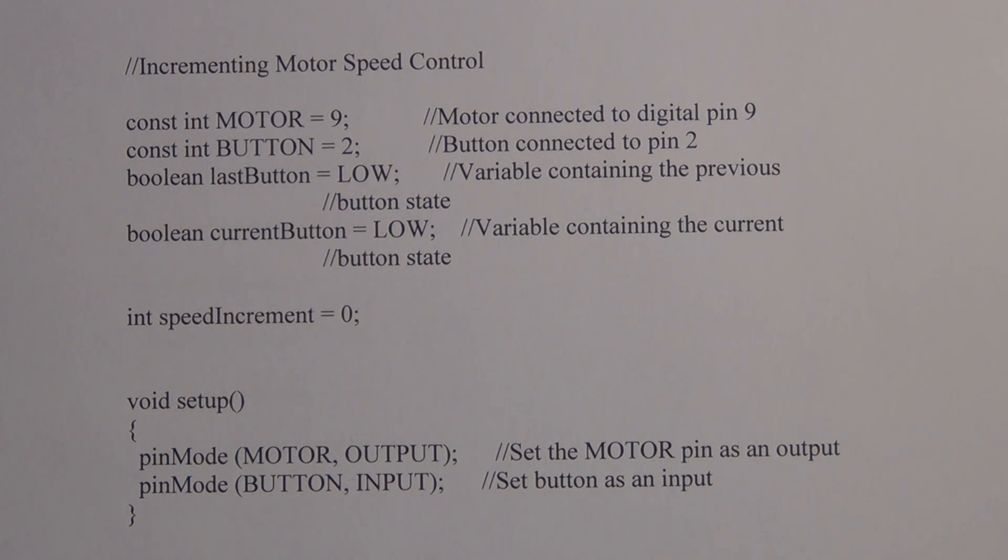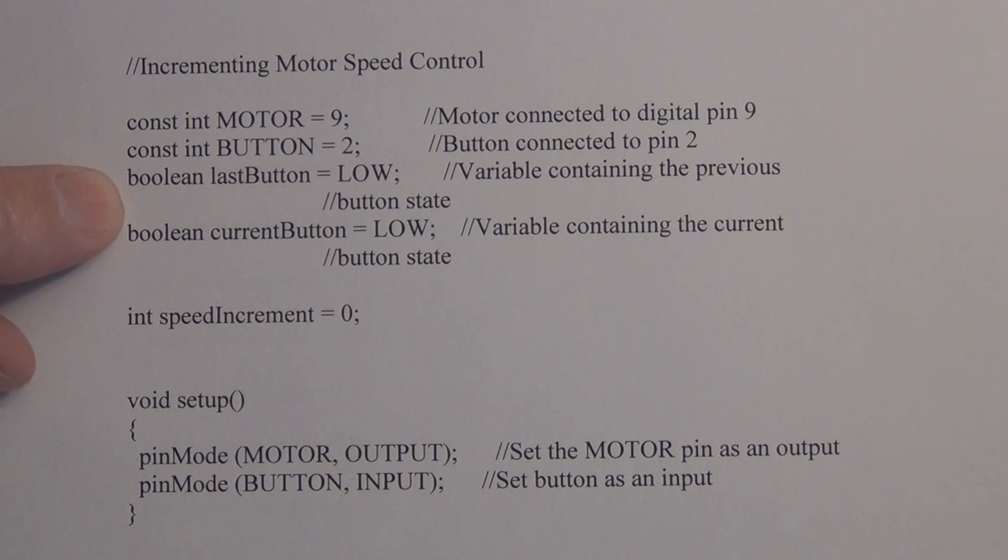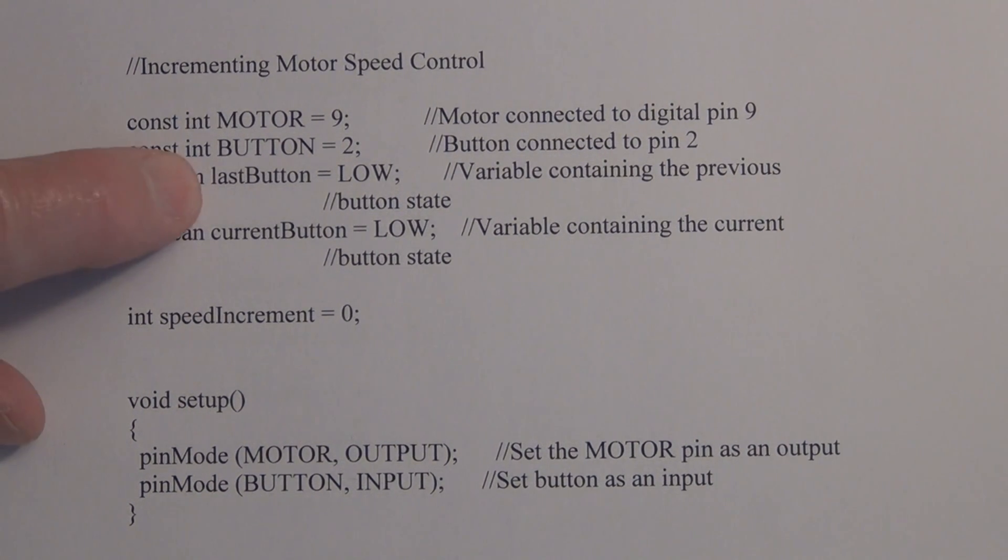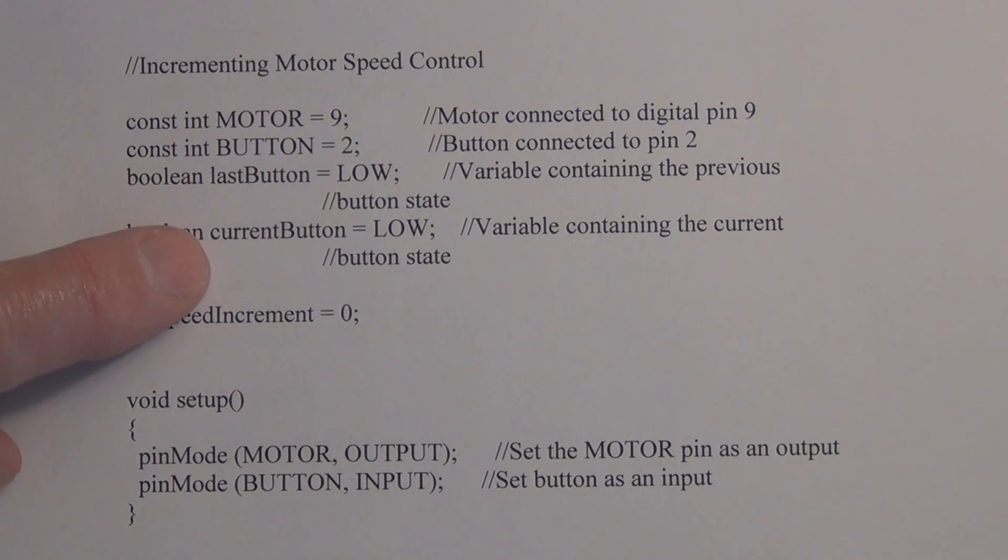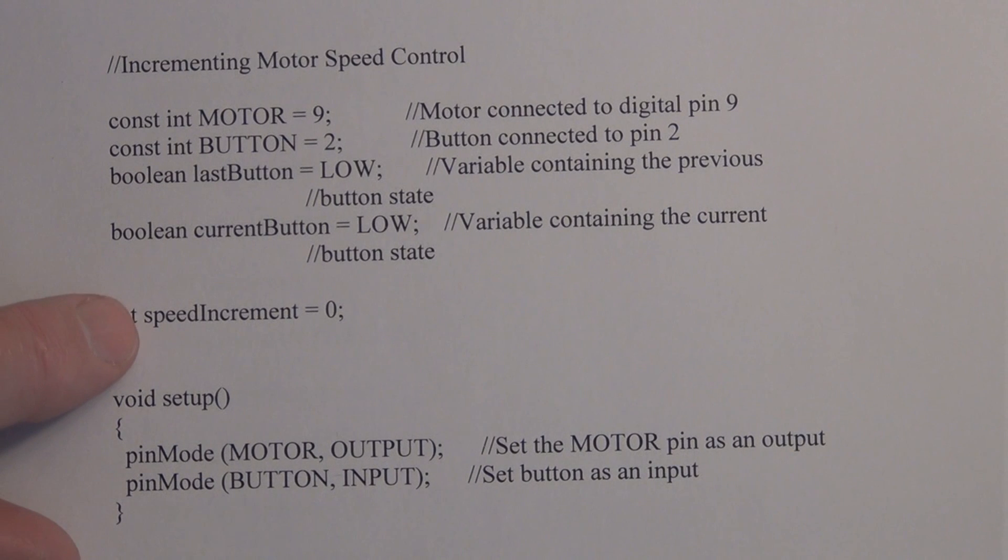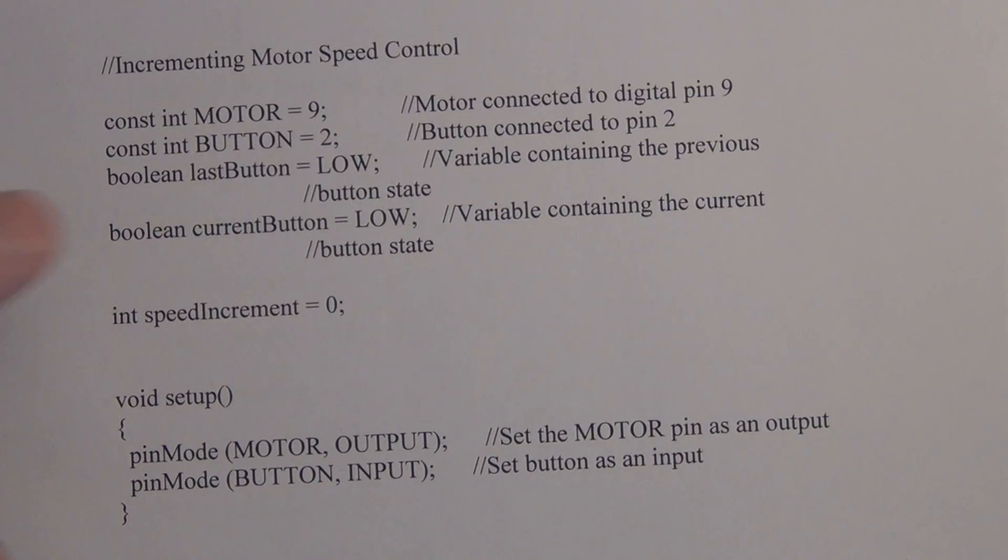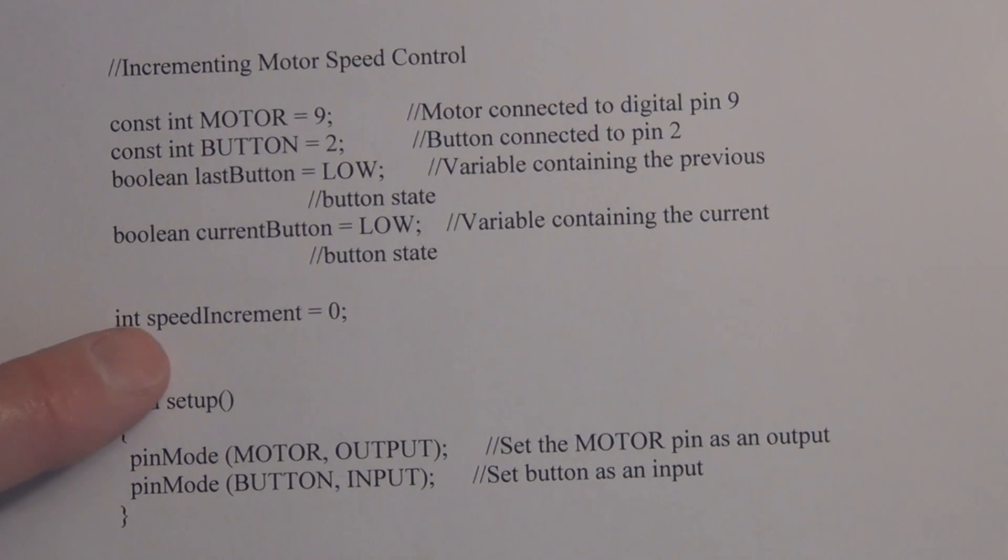We're doing a digital read on pin 2. So this is exactly the same for this debouncing portion, same as the previous video. We got the last button initializing to low, current button initializing to low. And here I have what I'm using for speed increment to keep track of the speed or stepping the speed.